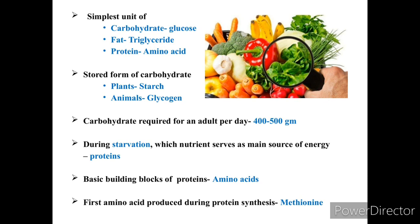The stored form of carbohydrate in plants is starch, while the stored form of carbohydrate in animals is glycogen. The carbohydrate required for an adult per day is 400 to 500 grams.